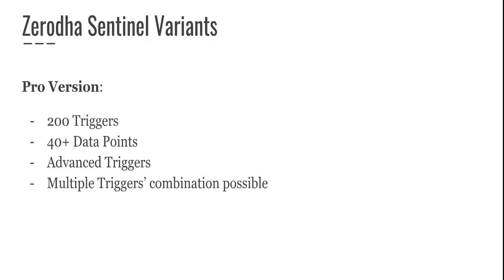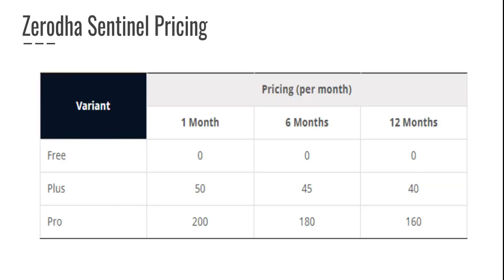Which version you choose really depends on your expectations, how you trade, and what level of trader you are. For pricing, the free version has no cost. For the Plus plan, it is 50 rupees for one month, 45 rupees per month for a six-month subscription, and 40 rupees per month for 12 months. Similarly, pricing exists for the Pro version as well. Now let's do a small demo of Zerodha Sentinel and see how it actually works.